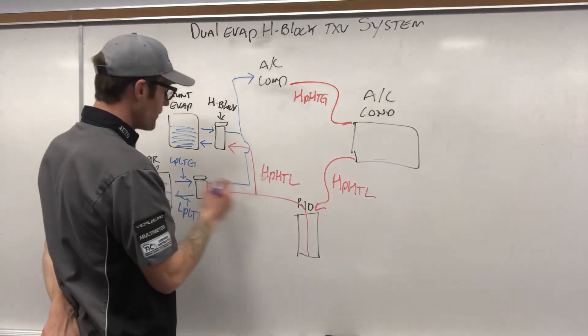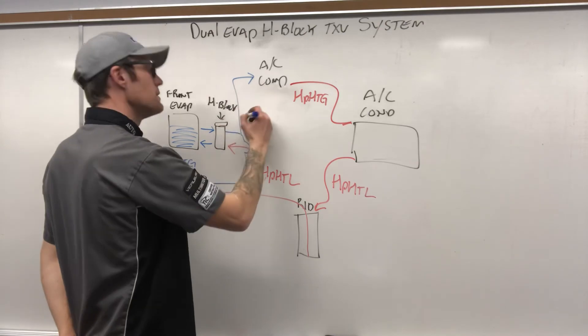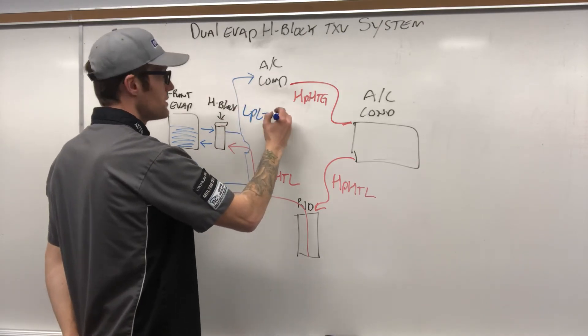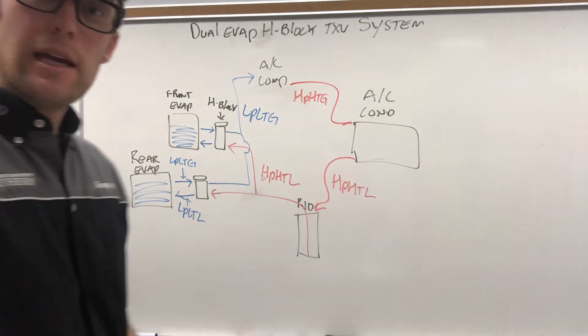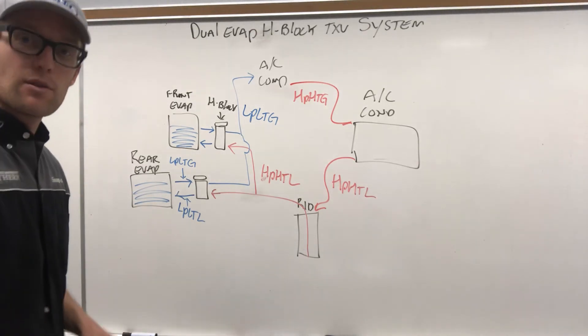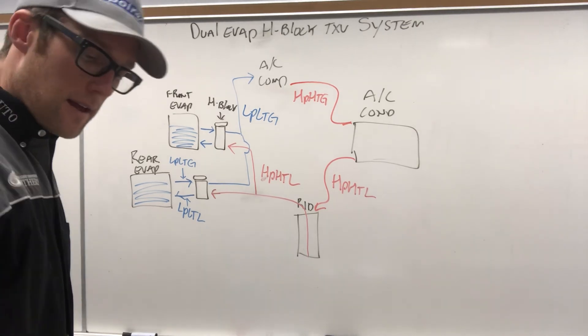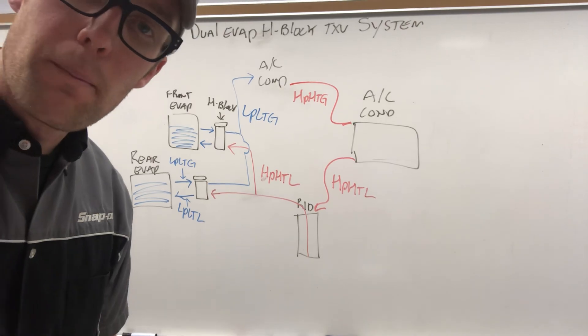So last thing I want to add: from both of the H-blocks we should always be seeing low pressure, low temperature gas. So this is the loop in sum. This is everything that we covered. If you guys missed this, this is where it's at. Thanks for watching, talk to you later. Bye bye.